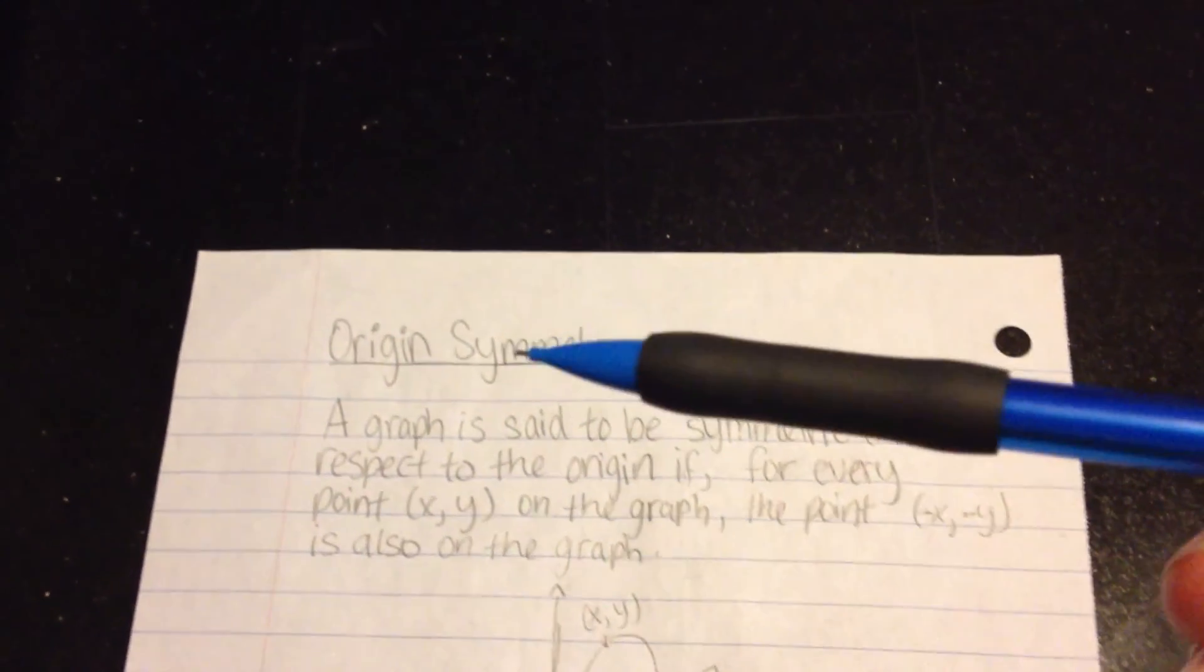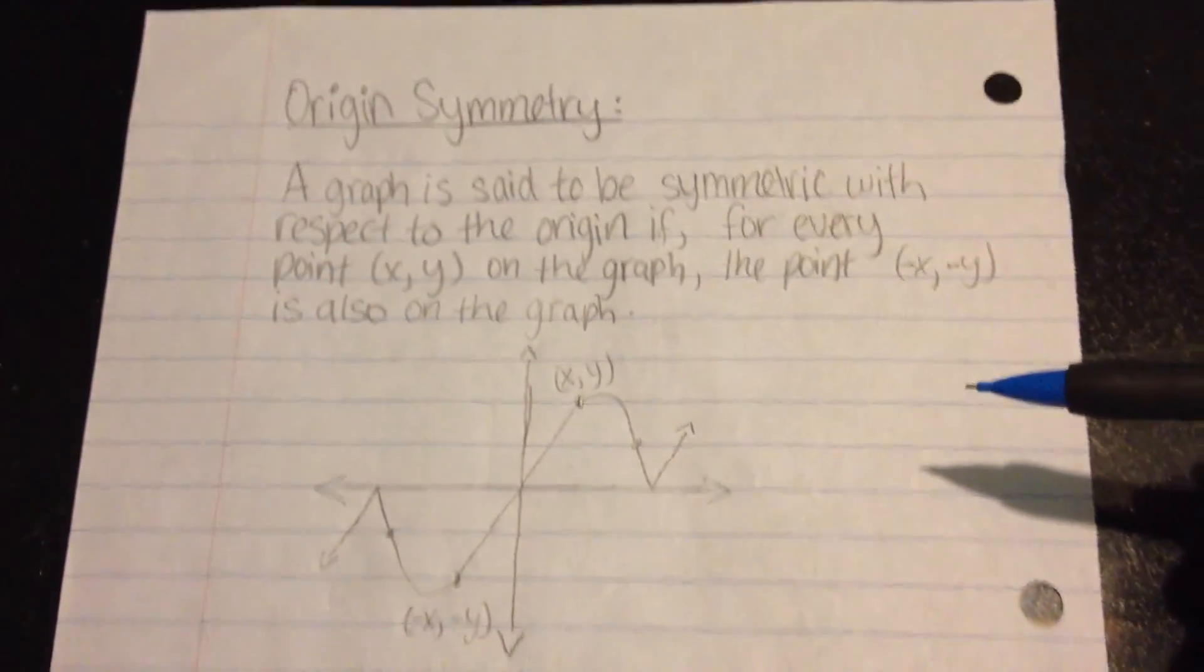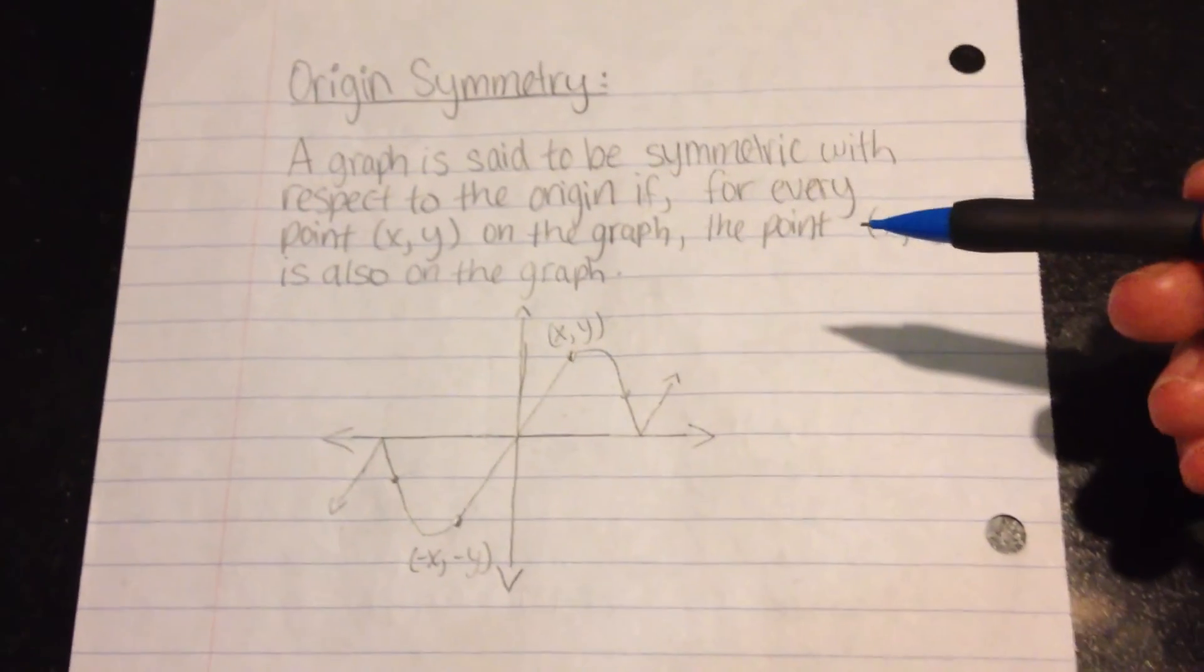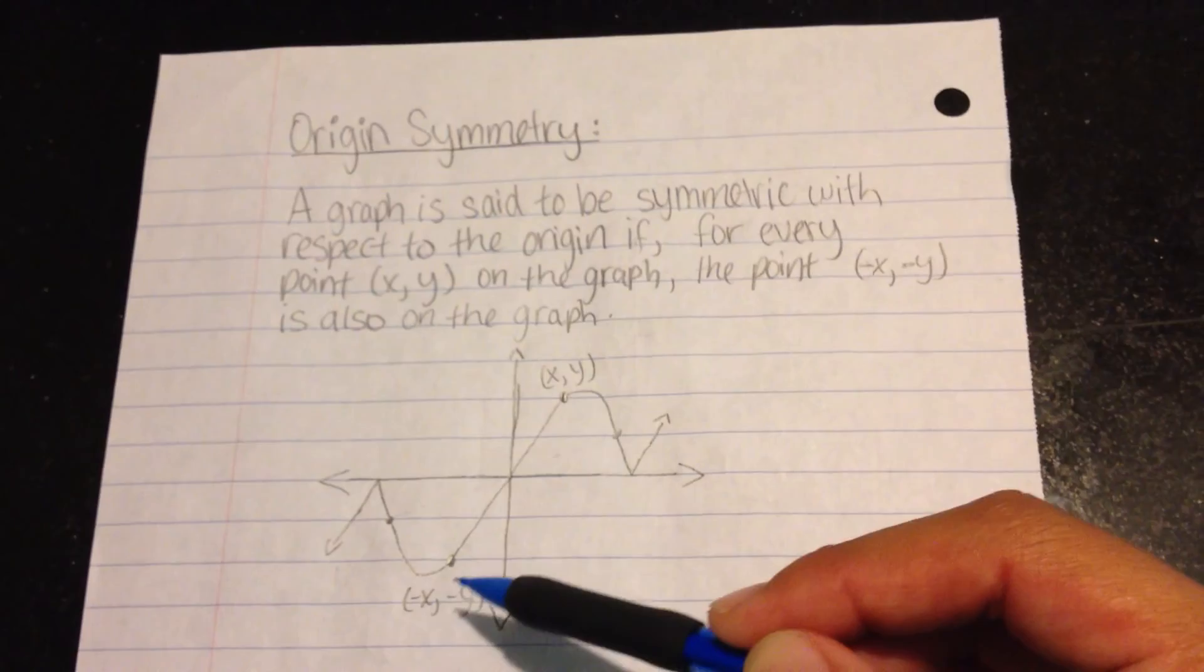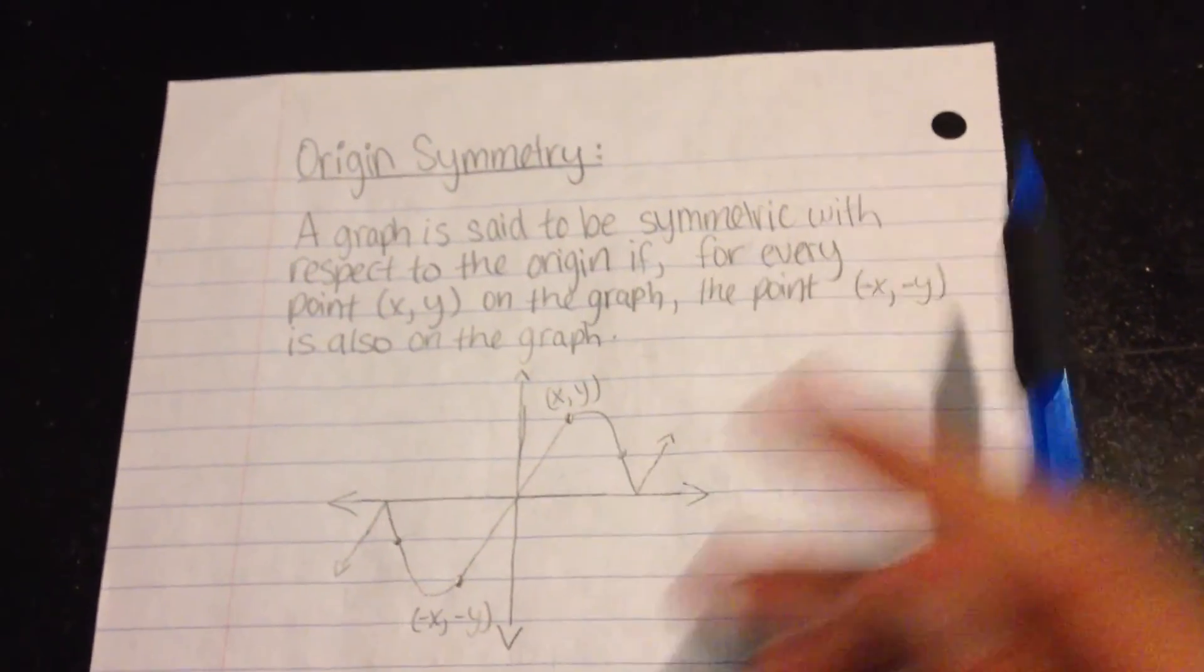Lastly, for origin symmetry, a graph is said to be symmetric with respect to the origin if for every point (x, y), the point (negative x, negative y), down right there, is also on the graph.